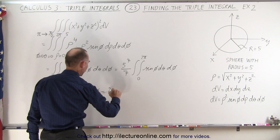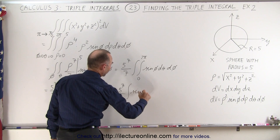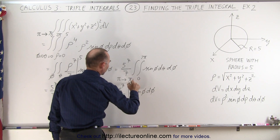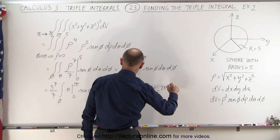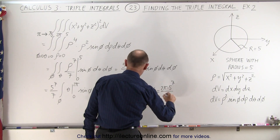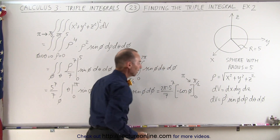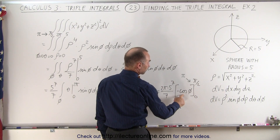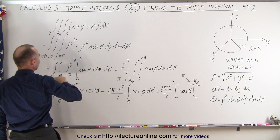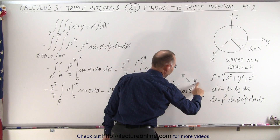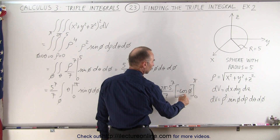That becomes 2 pi times 5 to the seventh power divided by 7, and then the single integral of the sine of phi d phi evaluated from 0 to pi over 2 is left. When we integrate that, we get 2 pi times 5 to the seventh power divided by 7 times the negative cosine of phi. Wait — not pi over 2. We need to integrate from 0 to pi. I've got this wrong — we have to go over 180 degrees, so this is from 0 to pi, not pi over 2. Plugging in the upper limit gives negative cosine of pi, which is negative negative 1, a positive 1. Plugging in the lower limit gives minus negative 1. So this becomes equal to 2.